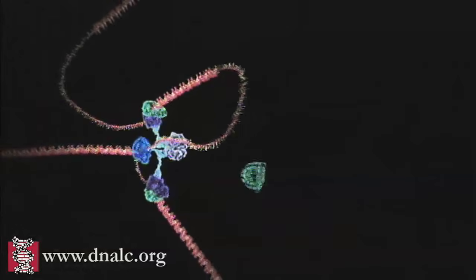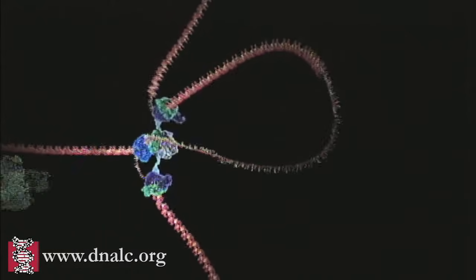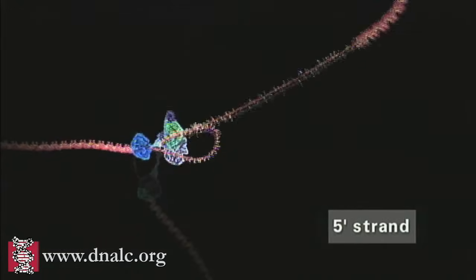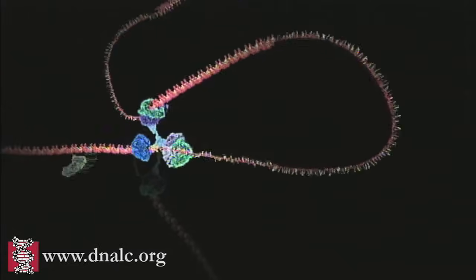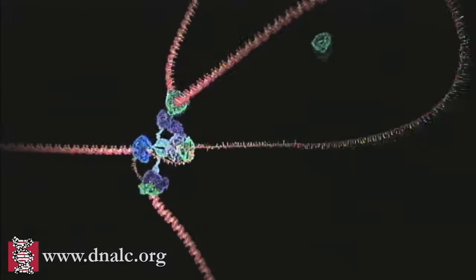The separated strands are called 3' and 5', distinguished by the direction in which their component nucleotides join up.